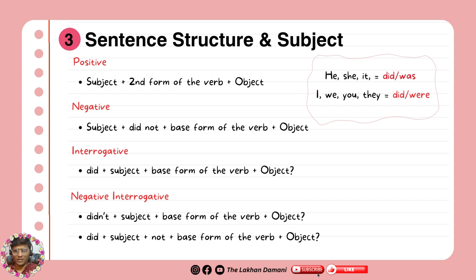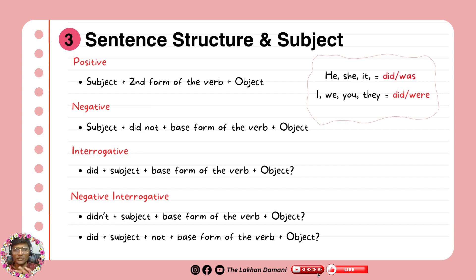We always use he, she, it with did and was; and I, we, you, they with did and were. When you talk about had, you can use had with all of them — I had, we had, you had, she had. It applies to all subjects.